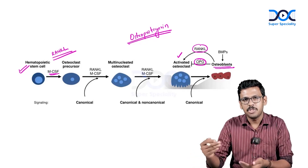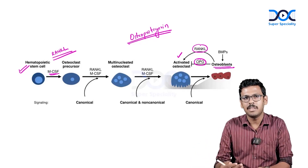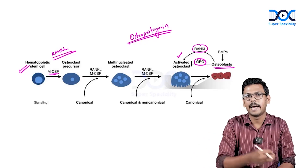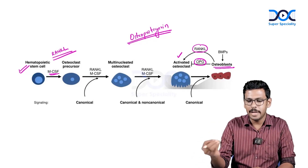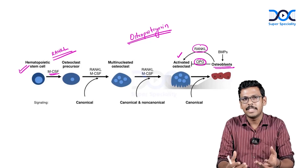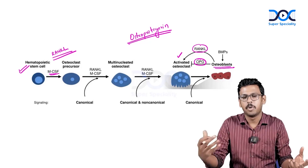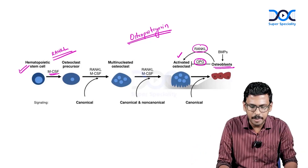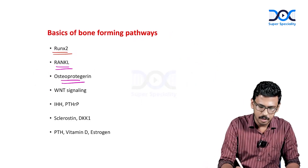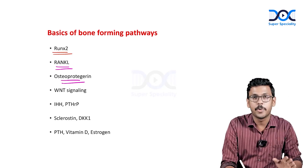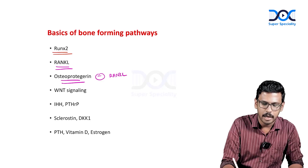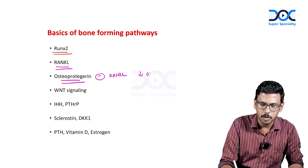For example, estrogen binds to osteoblasts to increase osteoprotegerin, whereas parathyroid hormone and vitamin D stimulate osteoblasts to secrete more RANK ligand. This balance determines net bone resorption or net bone formation. Osteoprotegerin is a substance produced from osteoblasts that antagonizes RANK ligand and reduces osteoclast differentiation.